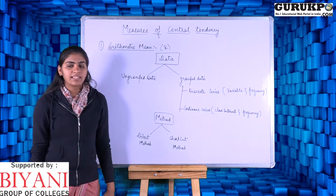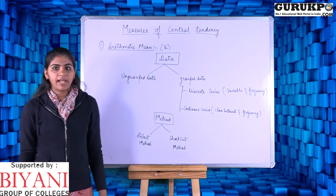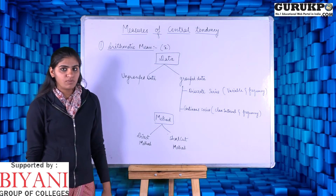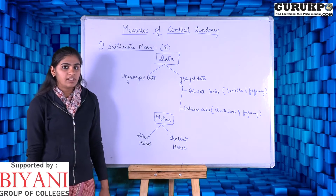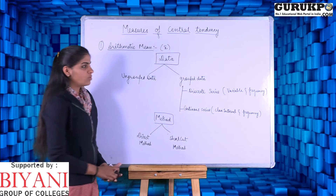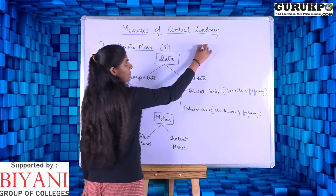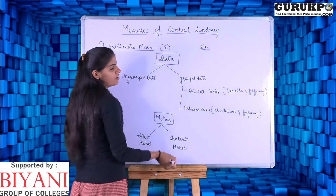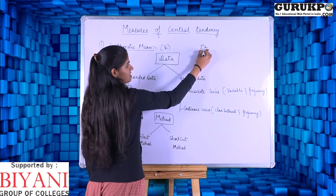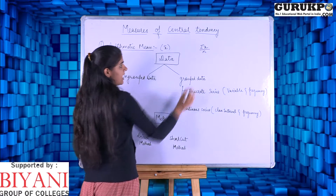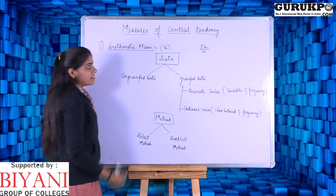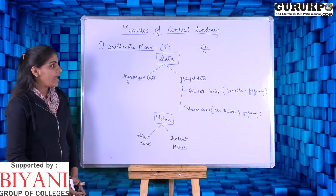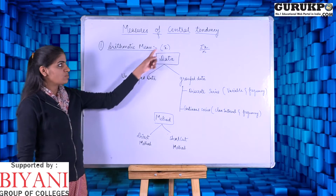Arithmetic mean is calculated by the summation of all observations, which is denoted as sigma x, divided by the number of observations, which is denoted by n. This arithmetic mean is symbolized by x-bar.